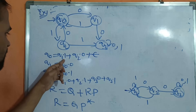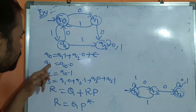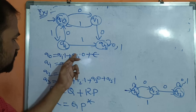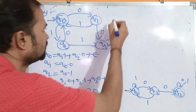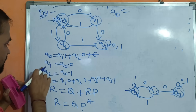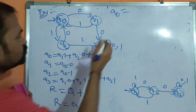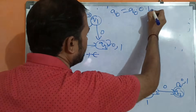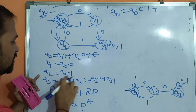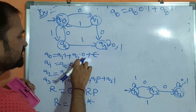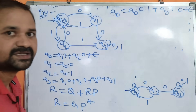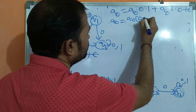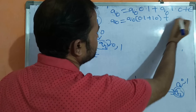Observing Q0: Q0 = Q1·1 + Q2·0 + ε. Substituting Q1 = Q0·0 and Q2 = Q0·1, we get Q0 = Q0·0·1 + Q0·1·0 + ε. Taking Q0 as a common factor: Q0 = Q0·(01 + 10) + ε. This is in the form R = Q + R·P, where R = Q0, Q = ε, and P = (01 + 10).